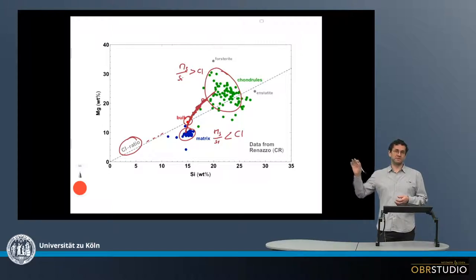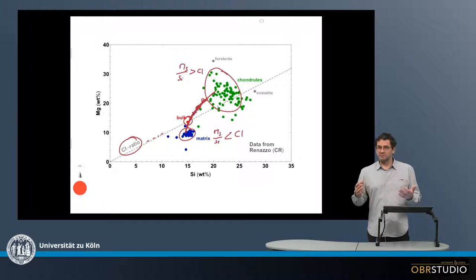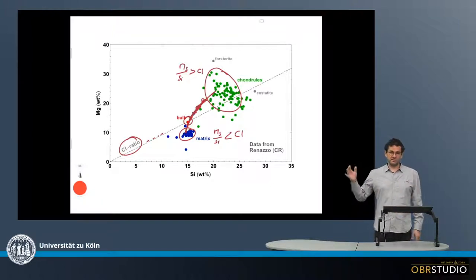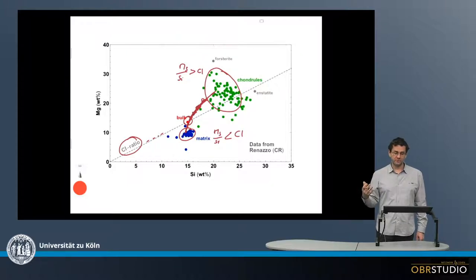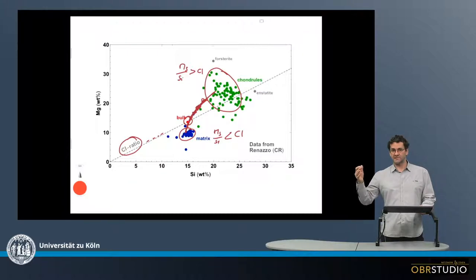it seems rather more likely that chondrules and matrix form from one single chemical reservoir, from which chondrules first form, because these are high-temperature objects, and later the matrix formed. And this is the important interpretation from the chondrules matrix complementarity. Thank you.